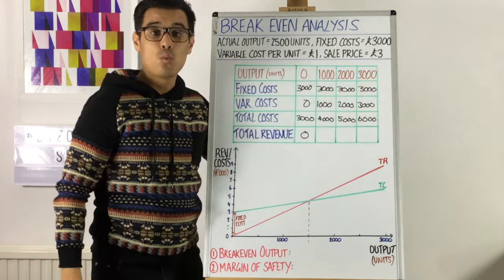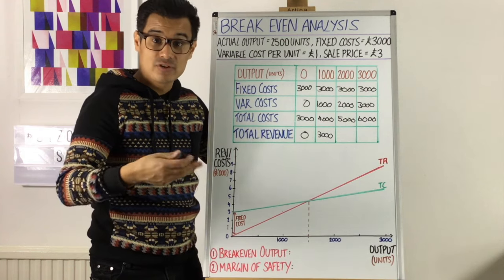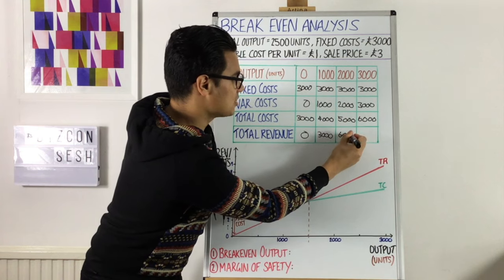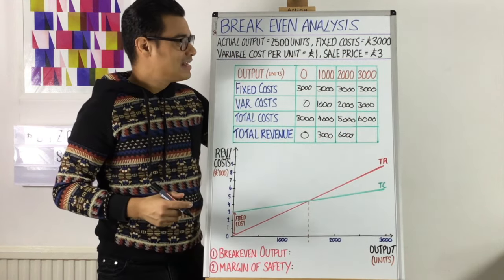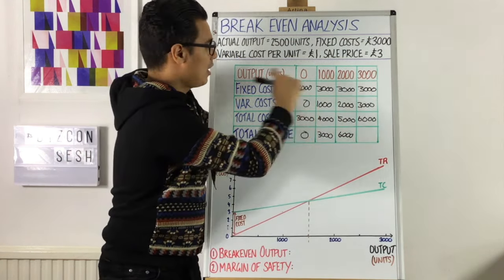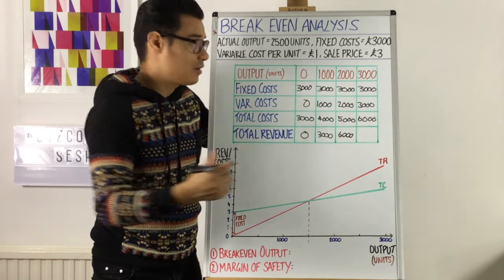£1,000 times 3. So £3,000. Then for output of 2,000 units, 2,000 units, if you sold them all at £3 a unit, then that is 3 times 2,000, 6,000. So we put 6,000 here. And in the final column, if you have an output of 3,000 things at £3, then 3,000 times 3 is 9,000.